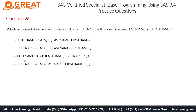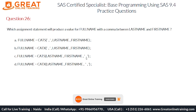Let's see the third option. Full name is equal to CATX of last name and first name. Here we can see the delimiter — the comma — is added as the last argument. But the CATX function requires the delimiter as the first argument, not the last, so option C is also wrong.